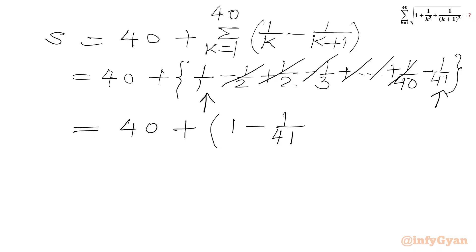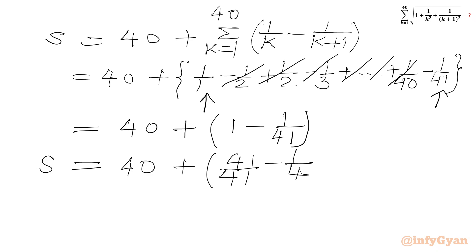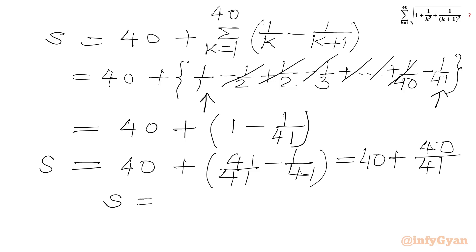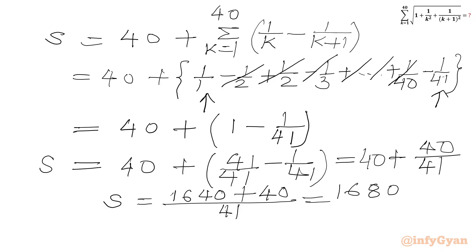Now we will take LCM and write sum S equal to 40 plus, writing 1 as 41 over 41 minus 1 over 41. This will be equal to 40 plus (41 minus 1) over 41, which is 40 plus 40 over 41. So S equals 40 times 41 over 41 plus 40 over 41, giving us 1640 plus 40 over 41, which gives us 1680 over 41. So our answer is sum S equal to 1680 over 41.